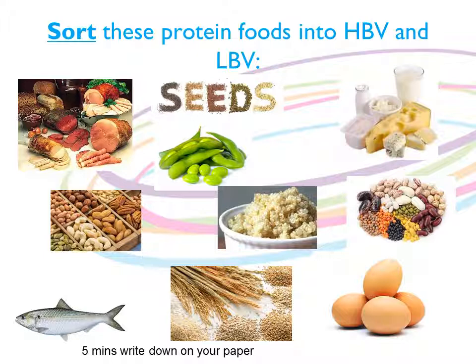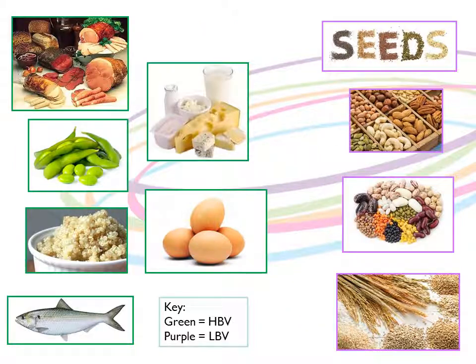Now complete this five minute sorting activity. Sort the protein foods into HBV and LBV. So how many did you get right? If you look at the key at the bottom of the slide, HBV is green and LBV is purple. If you didn't get them all right, please make any amendments you need to now.